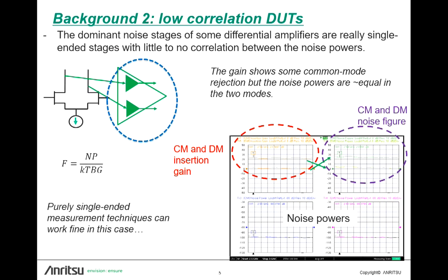Let's just look at a couple of examples. Starting with a two-stage kind of structure where the dominant noise source is just two parallel amplifiers, which is done in some designs — these are probably going to be quite uncorrelated. The gain of the structure will have some common mode rejection, but the overall noise figure is a bit less interesting. Plotted here are the common mode and differential noise powers, and those are equal. The insertion gains for those two modes are quite different, so the noise figures are quite different, but that's just following a one-over-gain kind of relationship. In this kind of situation, measuring essentially a single-ended noise figure and averaging it between the two gets pretty close.